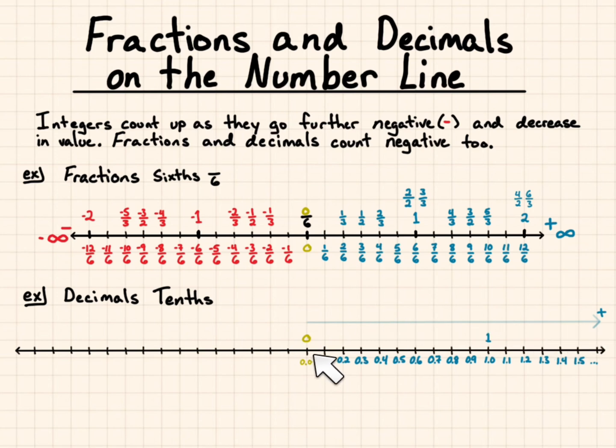The negatives mirror the positives going left. And after you have your tenths down, know that negative 1.0 tenths is the same as negative 1.